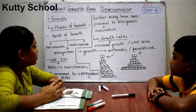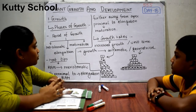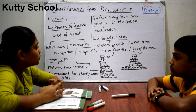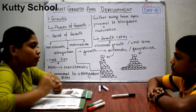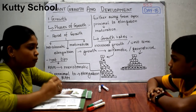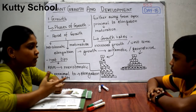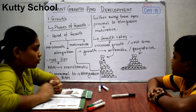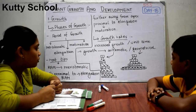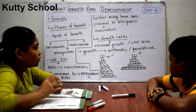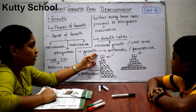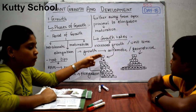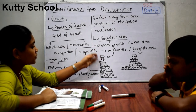Next we will see growth rates. Growth rate is the increased growth per unit time — how much growth increases per unit time. Growth is of two kinds: arithmetic growth and geometric growth.